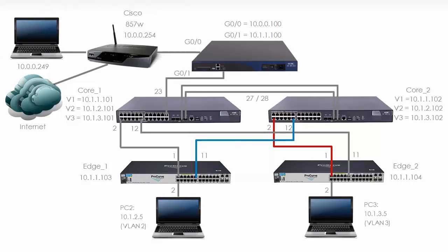In this example we're going to create two instances. Instance 1 is going to have VLAN 1 and VLAN 2 mapped to it. Instance 2 is going to have VLAN 3 mapped to it. We are going to make Core 1 the root of Instance 1 and Core 2 the root of Instance 2.